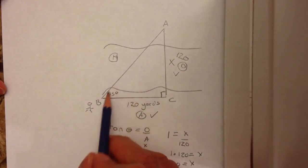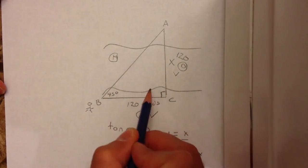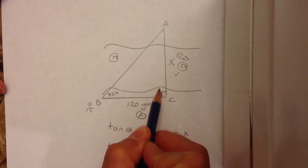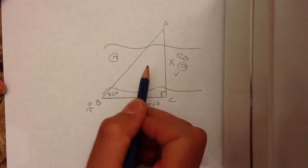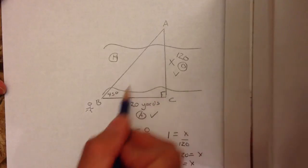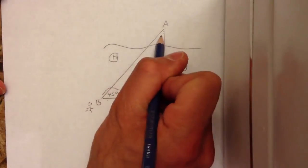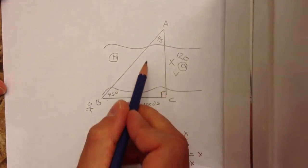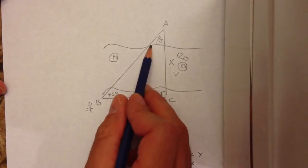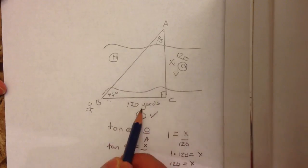I know it seems weird, but tan of 45, the reason why this is, is the angles of a triangle add up to 180. So if that's 90 and that's 45, it means this angle is also 45. And because both the bottom angles are the same here, it means both sides have to be the same.